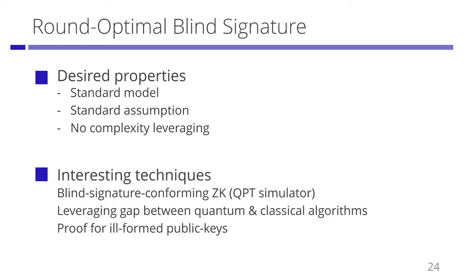Let me summarize. We present a round optimal blind signature protocol based on standard classical and quantum assumptions that does not rely on any trusted setup or complexity leveraging. We introduce several interesting techniques, in particular the notion of blind signature-conforming zero-knowledge and the use of quantum power in reductions. We also use the proof system for ill-formed public keys as a crucial tool.